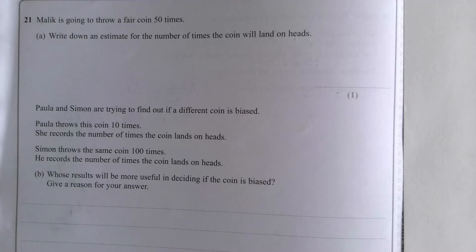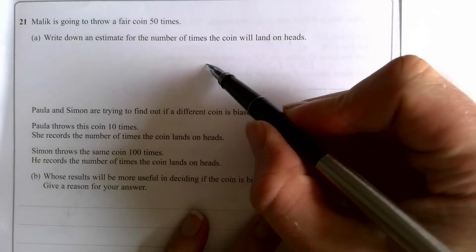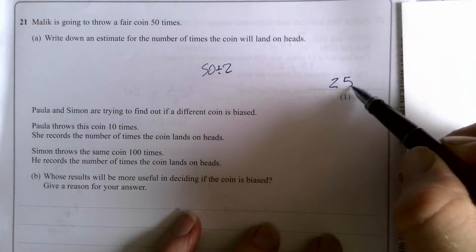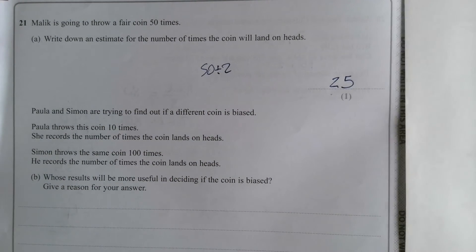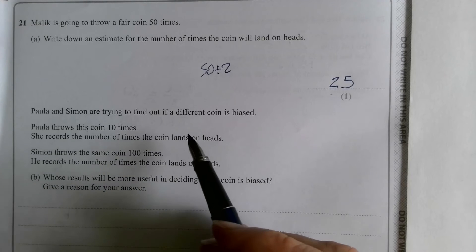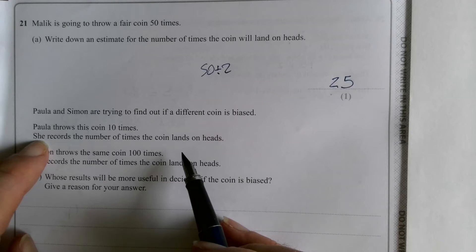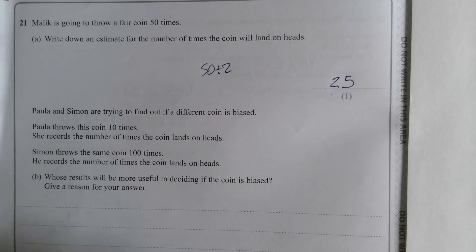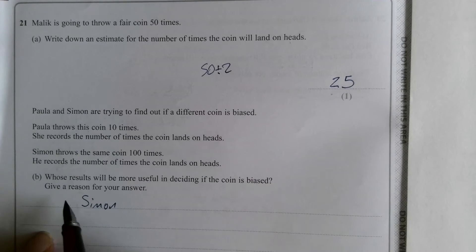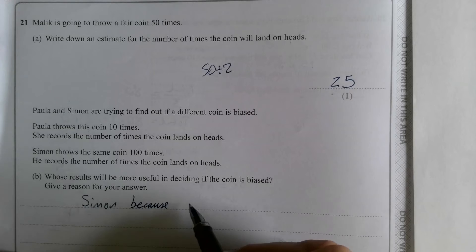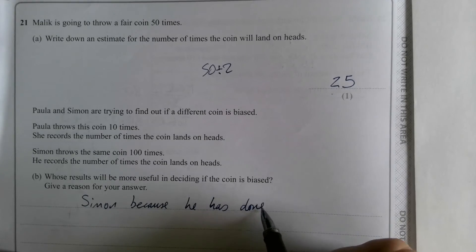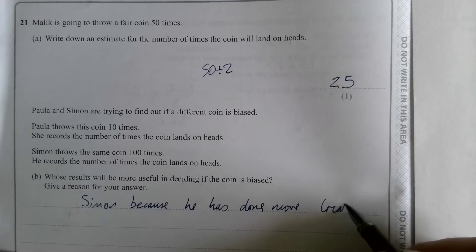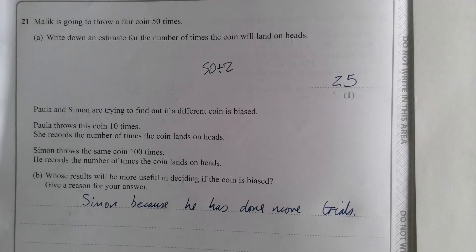Okay. Malik is going to throw a fair coin 50 times. Two one-mark questions here on probability. So an estimate for the number of times the coins will land. Well, it's 50-50, isn't it? So 50 divided by 2 is going to give me that. It just says write down. So it's one mark for 25. It's the only answer that makes sense. Paula and Simon are going to try to find out if a different coin is biased. Paula throws it 10 times, records the number of times it lands on heads. Simon does it 100 times. Whose results will be more useful? Well, Simon, but you don't get the mark just for saying Simon, because you need a reason. Because he has done more trials. The more trials you do, the closer you're likely to get to the real probability.